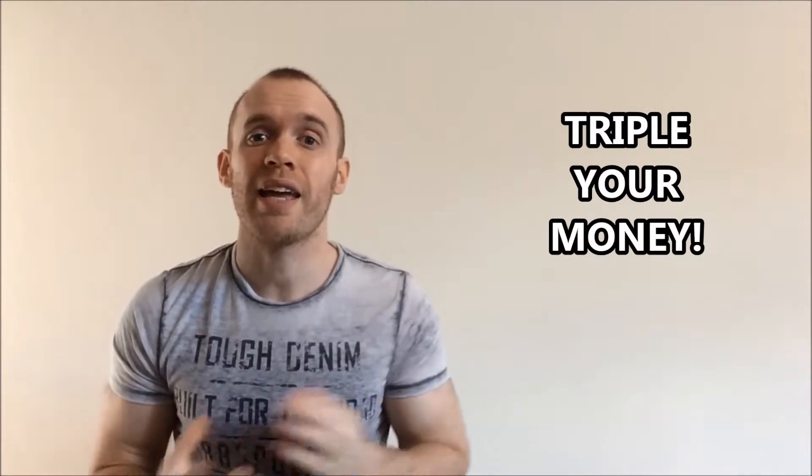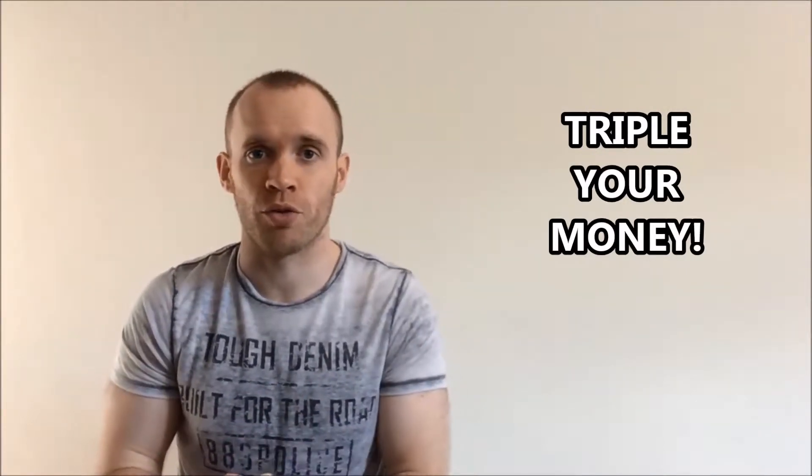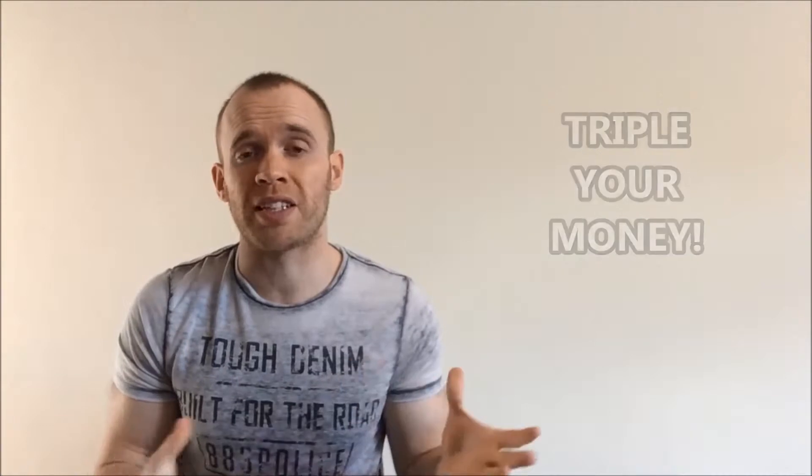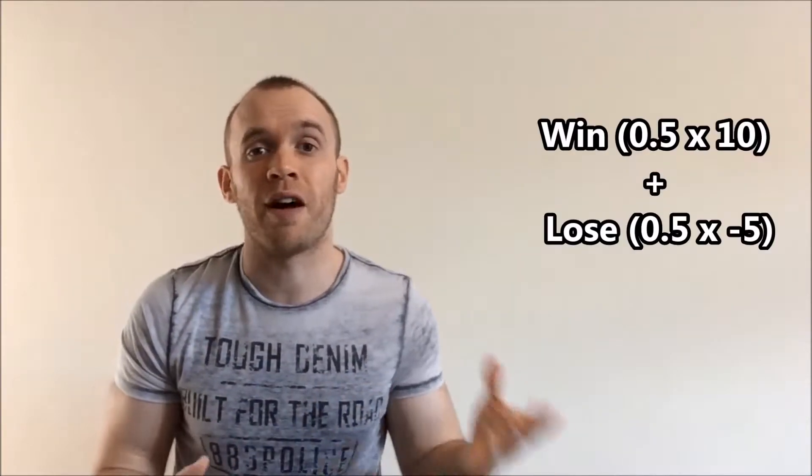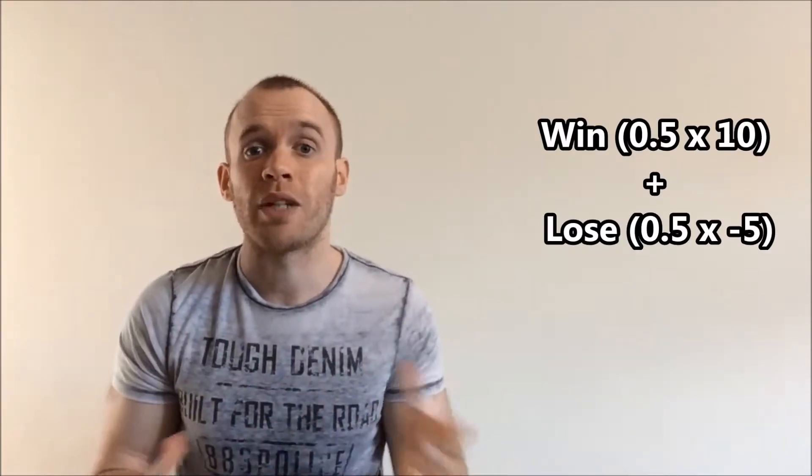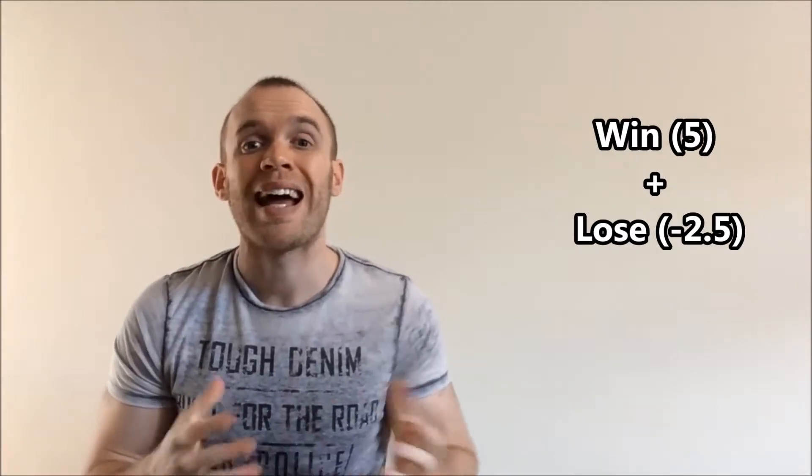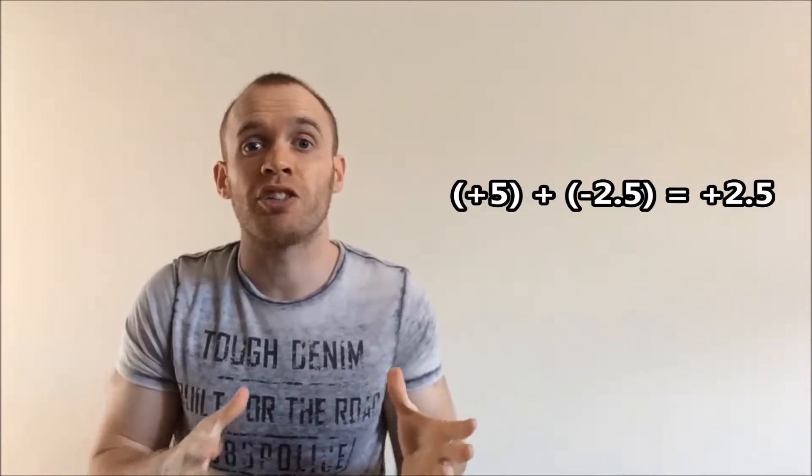If you multiply the expected value of zero by a thousand games, you still get zero. Now our guy on the stall is feeling very charitable and he's going to triple your money if you get it right and take your money if you're wrong. So same calculations as before, but this time you win 15 pounds, so it's going to be a 10 pound profit. So it's 0.5 times 10 which is 5, and 0.5 times minus 5 which is minus 2.5. Add them together and you get 2.5.